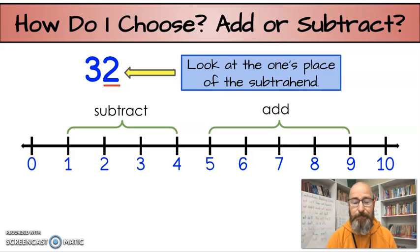32. What am I going to do? Add or subtract? Did you find the 2? It's right here. So, what do I do? Subtract. That's right. How much do I subtract? 1, 2. Again, 2 in the ones place.